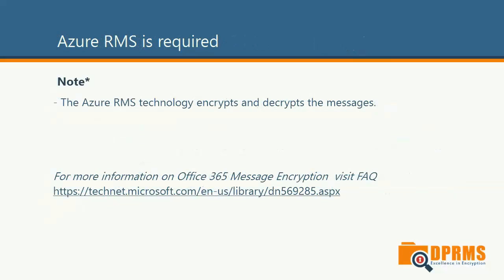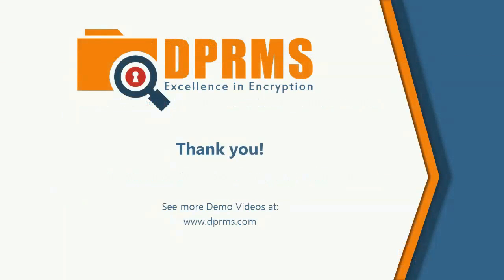We are near the end of the video, but it is worth clarifying the Azure RMS part. Office 365 message encryption is not the same thing as Azure RMS, but Azure RMS is listed as a primary requirement because it is the encryption service that encrypts and decrypts the emails in the background. I advise you to visit the frequently asked questions on TechNet, as there is very valuable information that can answer questions not covered in this video. Thank you very much for joining us — it is a great pleasure to have you with us at DPRMS. We value your privacy and help you keep your information protected. Do not forget to subscribe as more demo videos are coming soon. Have a good day, see you soon!